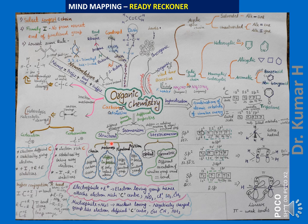There are certain compounds with the same molecular formula but different properties. These are called isomers and the phenomenon is called isomerism. There are two classes: structural isomerism — where compounds have the same molecular formula but differ in structure — and stereoisomerism — where compounds have the same molecular formula and structural formula but differ in spatial arrangement and behavior.